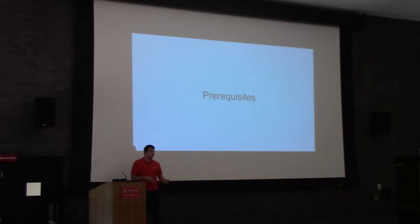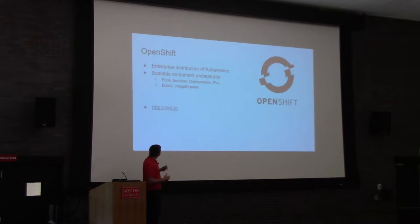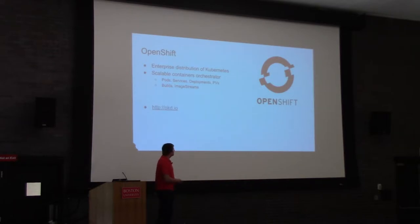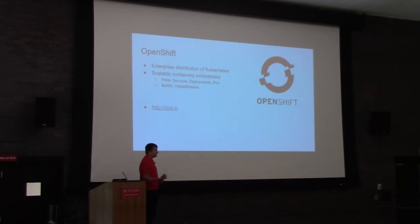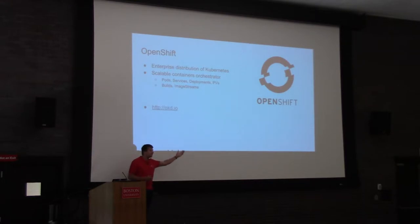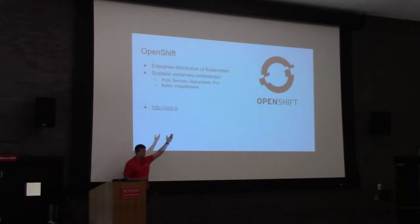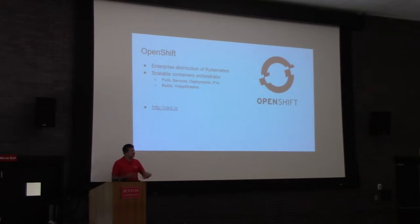For being able to work with JupyterHub on OpenShift there are some prerequisites. One of them is OpenShift — you need to have OpenShift running, which is kind of obvious. What is OpenShift? Quickly, for the audience: it's an enterprise distribution of Kubernetes, built on top of Kubernetes. It's a scalable container orchestrator, so if you have anything to do with containers and you want to run them in production, you want to use something like Kubernetes or OpenShift.